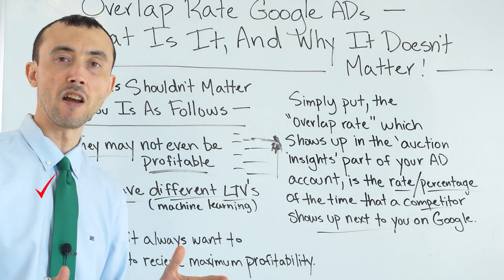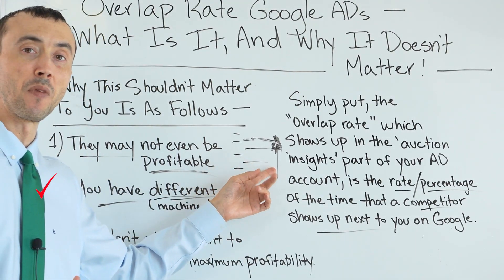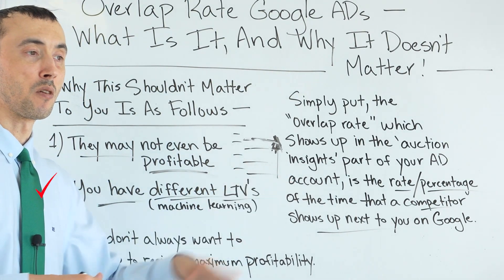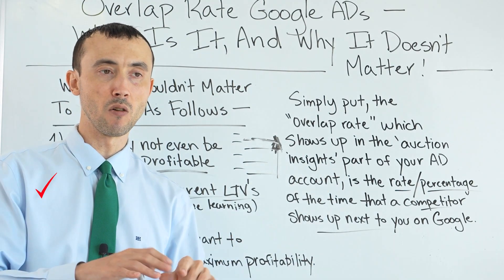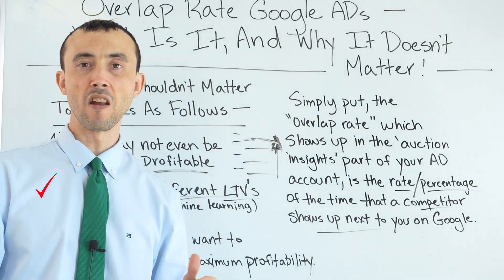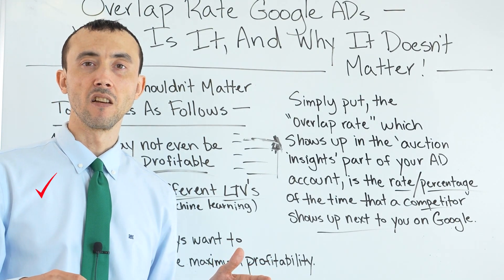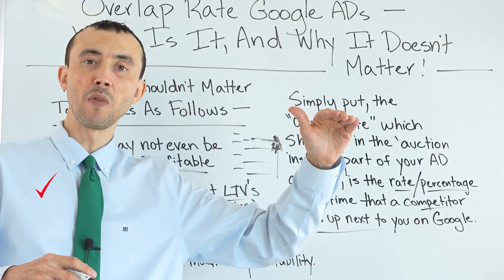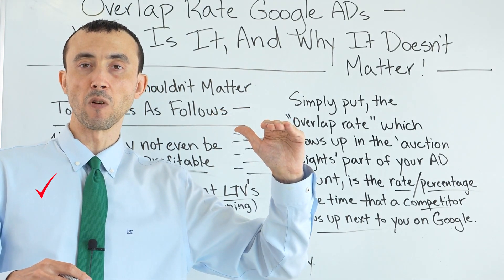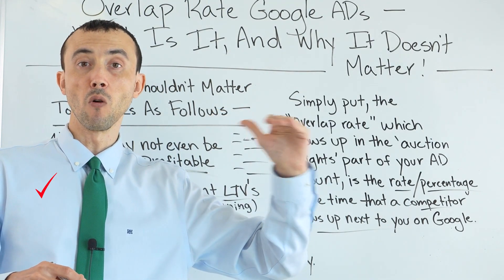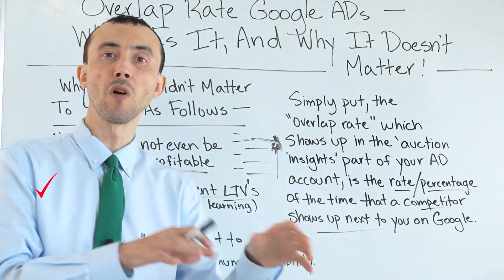That's a major consideration as to whether you should actually be showing up alongside somebody. What a lot of amateurs do is just Google their keywords, see their competitor there, see that they're not, and panic. But if you were to show up there, you might have a net negative ROI after expenses. So you don't want to be there — you want to go after those places where it is profitable.